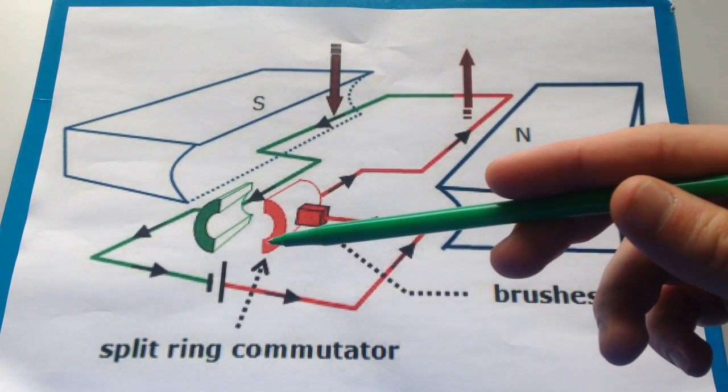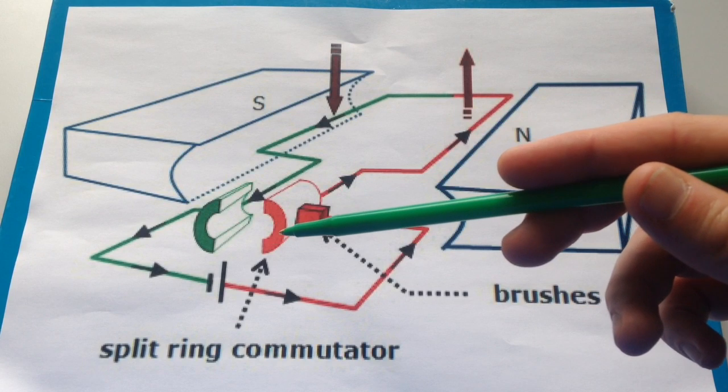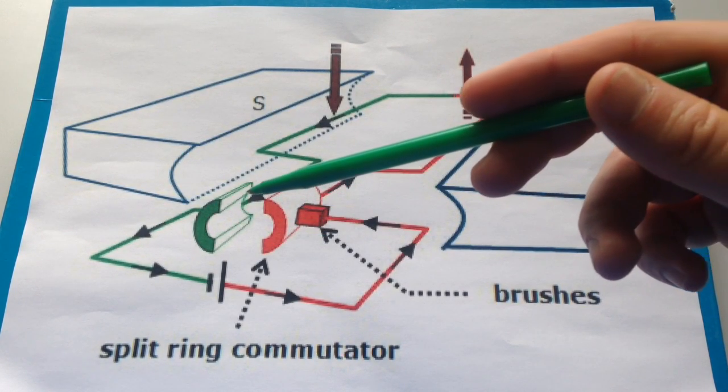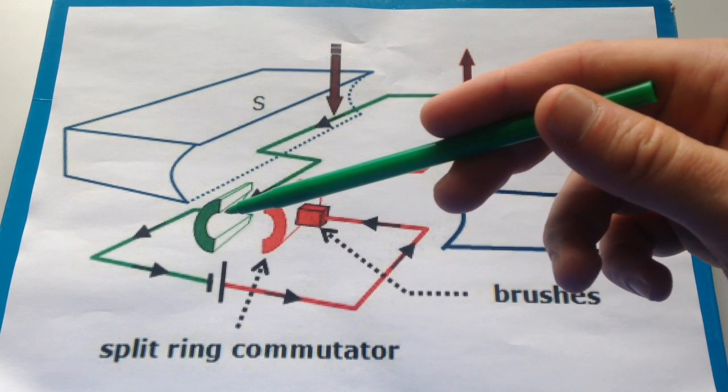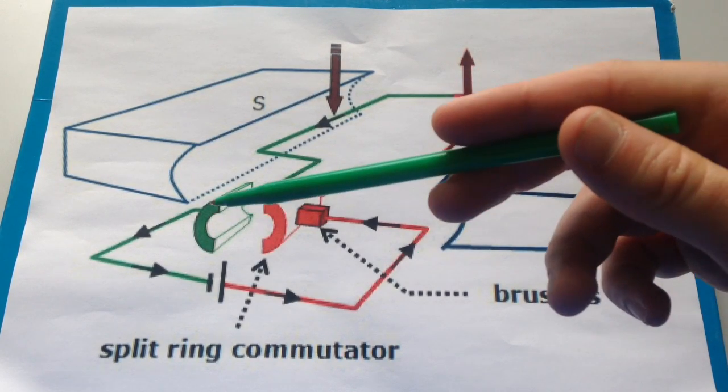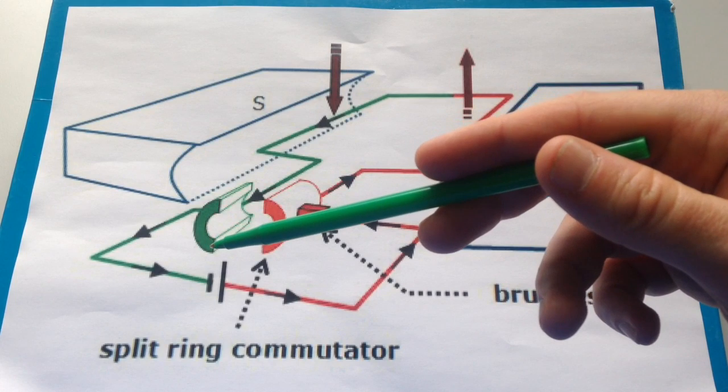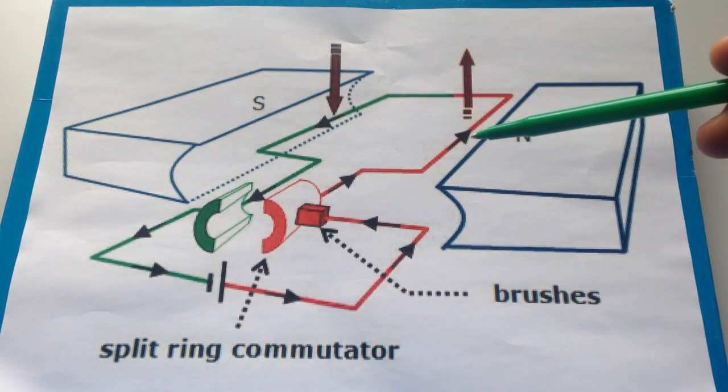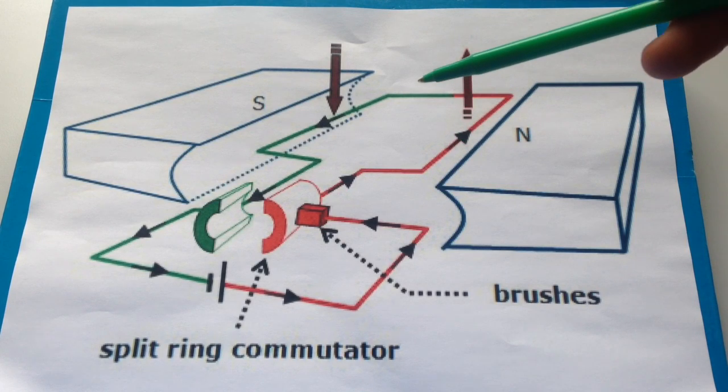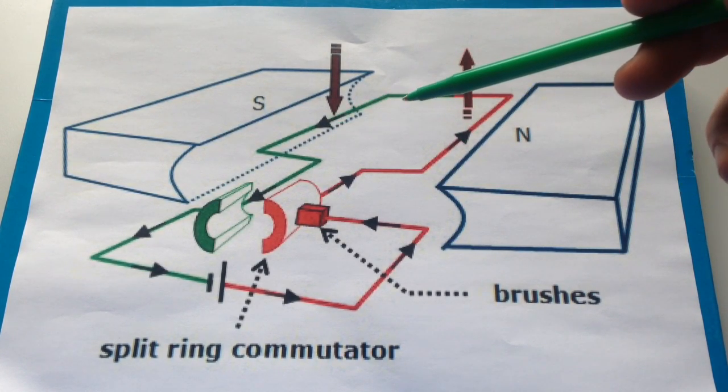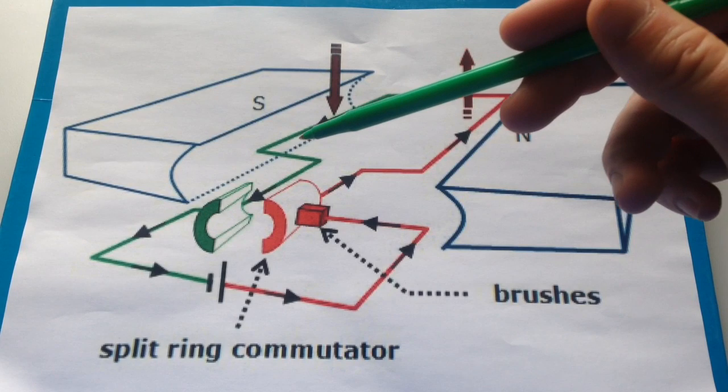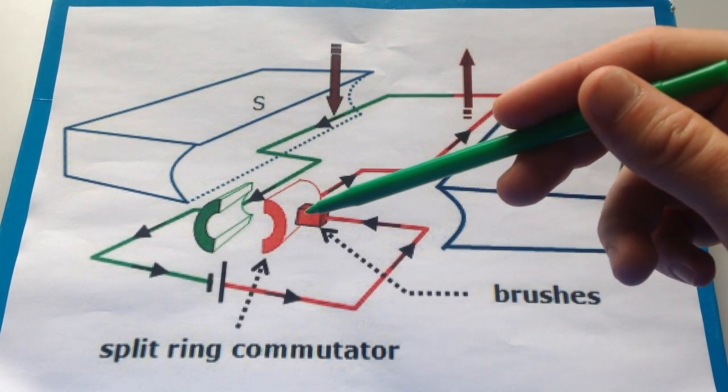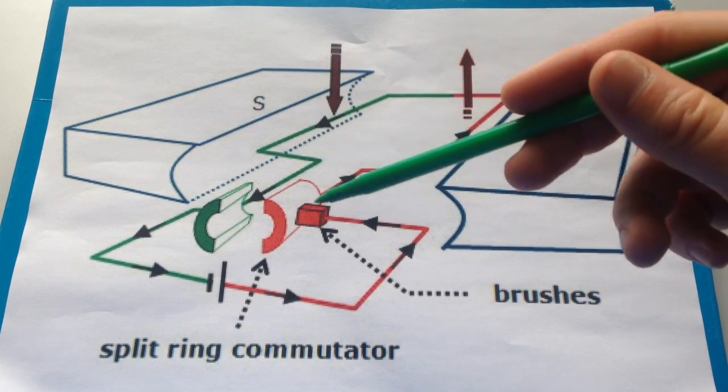And so what happens is the split ring loses contact with the right-hand brush. And as the motor continues to spin, it will make contact with the left-hand brush. And similarly, the left-hand side of the split ring will lose contact with the left-hand brush and make contact with this brush here. That will ensure that by the time this wire has spun 180 degrees, the current will be flowing towards us. And so the wire will be forced downwards and the motor can keep spinning in the same direction.